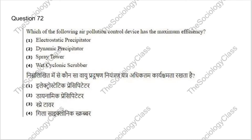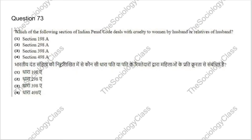Question 72: Which air pollution control device has maximum efficiency? Options: electrostatic precipitator, dynamic precipitator, spray tower, or wet cyclonic scrubber. The correct answer is A — electrostatic precipitator. Question 73: Which section of the Indian Penal Code deals with cruelty to a woman by husband or relative of husband? Options: Section 198A, 298A, 398A, or 498A. The correct answer is D — Section 498A.